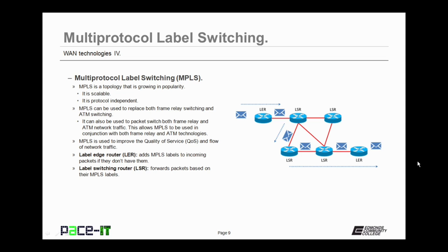MPLS is often used to improve quality of service and flow of network traffic. It uses a label edge router to add MPLS labels to incoming packets if they don't have them. The label edge router then passes those packets onto a label switching router, or LSR. The LSR forwards those packets based on their MPLS labels to their final destination.